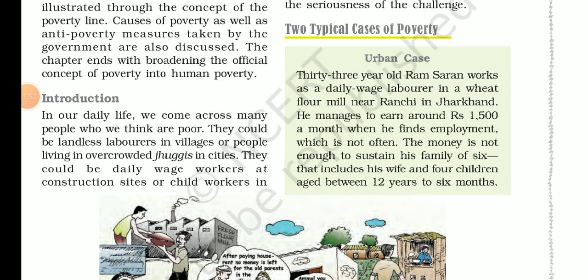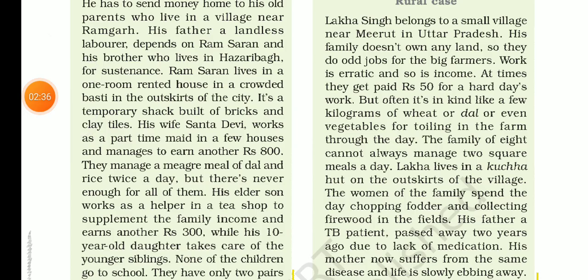Two typical cases of poverty. Urban case: Ram Saran is a daily wage laborer in a flour mill near Ranchi in Jharkhand. He earns around Rs. 1,500 per month when employed. He supports his family of six persons, besides sending some money to his elderly parents. His wife and son also work, but none of his four children can attend school. The family lives in a one-room rented house on the outer area of the city. The children are malnourished, have very few clothes, and no access to health care.